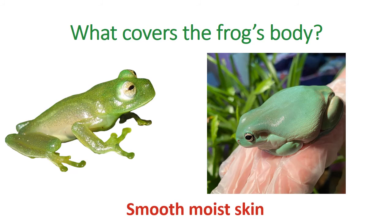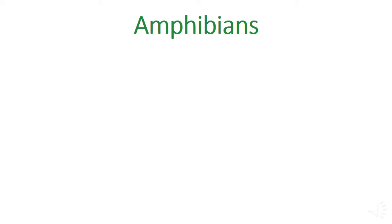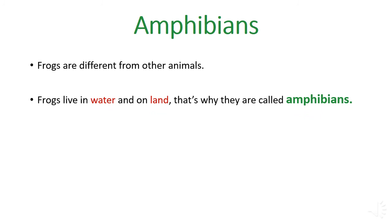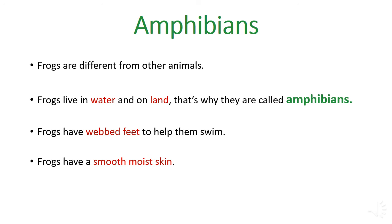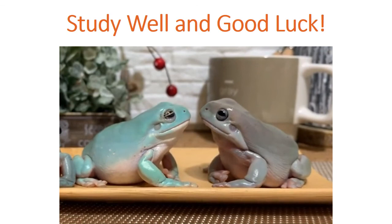So this is our lesson for today. We learned that we call frogs amphibians — that is the animal group for frogs. Frogs live in water and on land, that's why they are called amphibians. Frogs have webbed feet to help them swim. Frogs have a smooth, moist skin. And frogs use their very long tongue to get food. I hope you enjoyed it, my dear students. Study well and good luck!